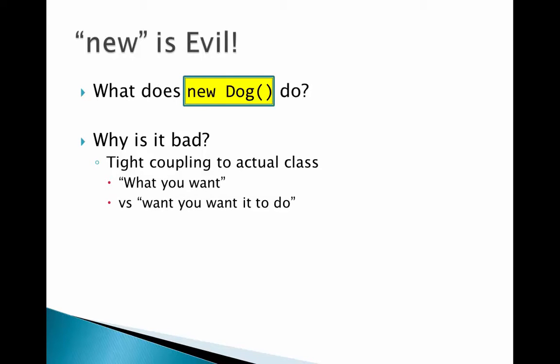The idea is to think about what you want versus what you want to do. `new Dog` is saying what I want is a dog — you care about the thing itself. If what I really care about is how I can communicate with a dog and what I want it to do for me, if we can abstract that out, that reduces our coupling. Rather than specifically depending on Dog, I can say I depend on something that does something for me.